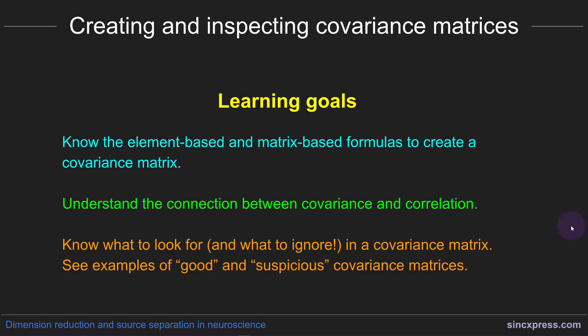In the previous video you learned about linear relationships between pairs of channels, and when you have a large data set with lots of channels you can represent all pairwise relationships using a matrix or covariance matrix. In this video I'm going to show you the formula that allows you to create a covariance matrix. In the next couple of videos you will also see how to implement this formula in code in MATLAB. This will allow you to further understand the relationship between covariance and correlation, and I'll show you lots of examples of covariance matrices, different ways of constructing them, and some things to look for that might indicate noise or bad channels.